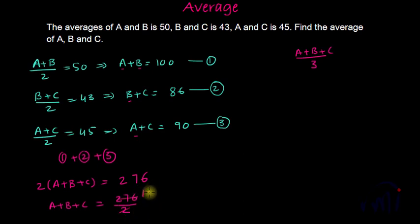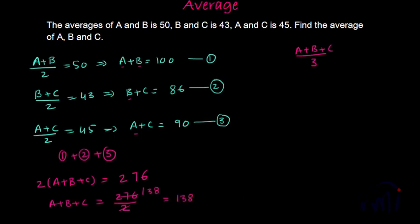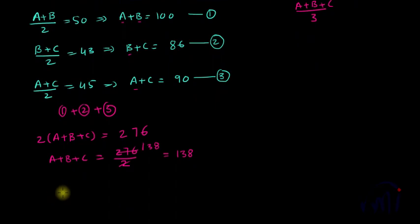2, 1 is a 2. 2, 3 is a 6. 2, 8 is a 16. Which is equal to 138. So if I want to find the average of A, B and C, I have to divide both sides by 3. So A plus B plus C by 3 will be equal to 138 by 3.